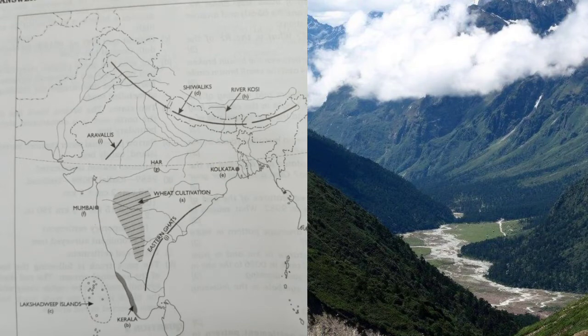Next outline map: mark and name the area in Peninsular India noted for wheat cultivation — 'A' and 'B'. Mark the area where rubber is grown on a large scale. Mark the Lakshadweep Islands and the Shivalik — 'D'. Name the main tea exporting port of India and the financial capital of India.